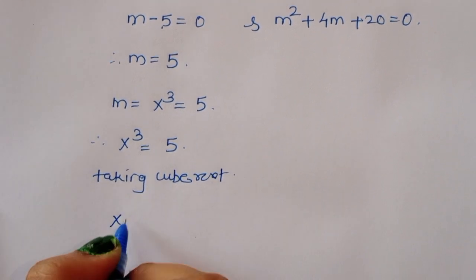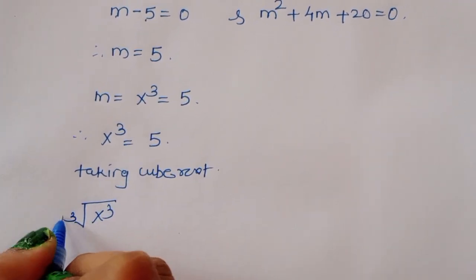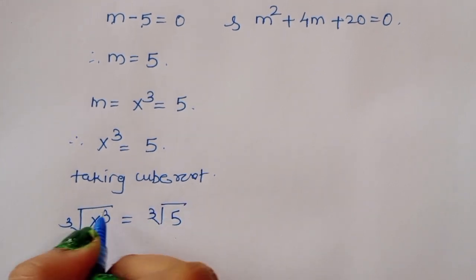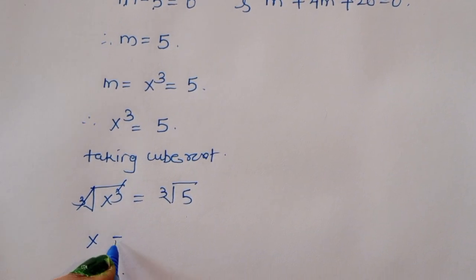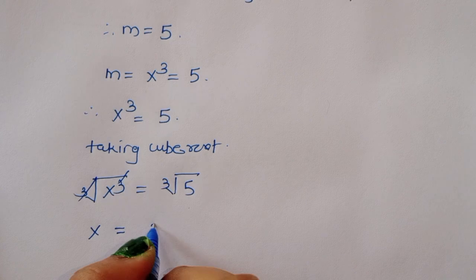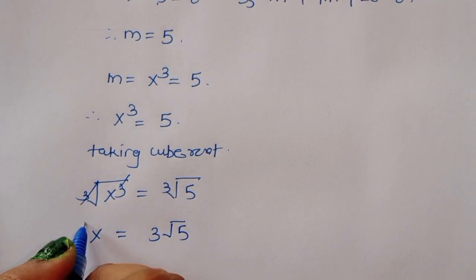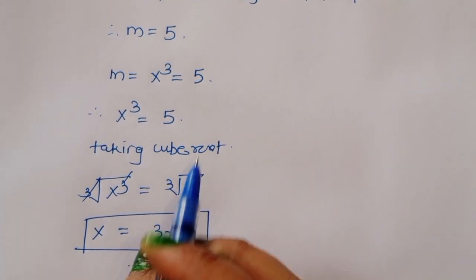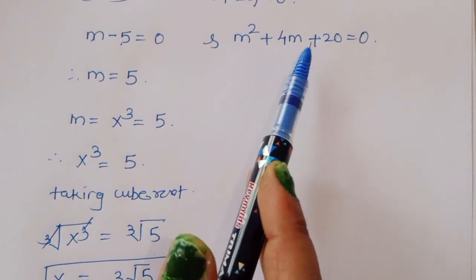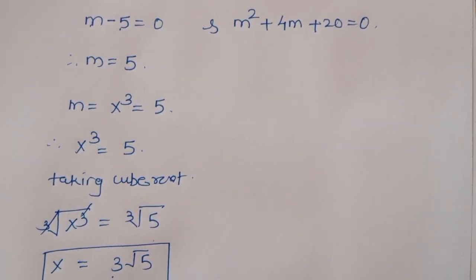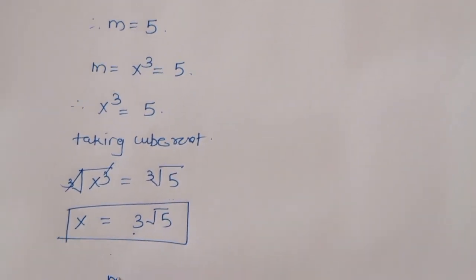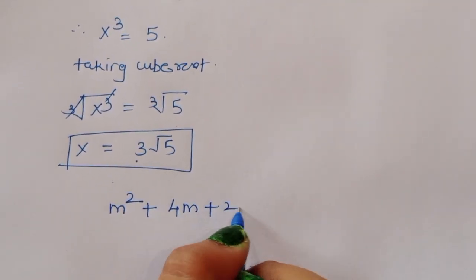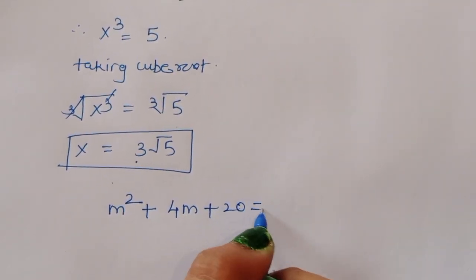Therefore x cubed equals 5, so x equals the cube root of 5. This is one value of x. Now for the second factor, m squared plus 4m plus 20 equals 0.